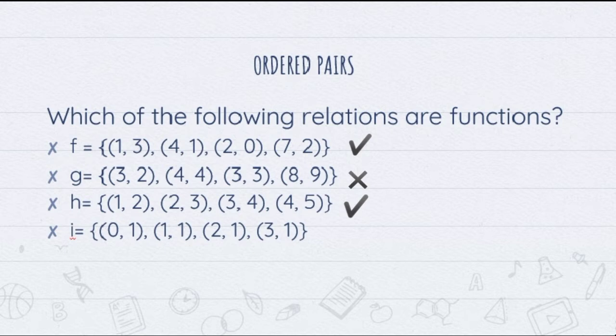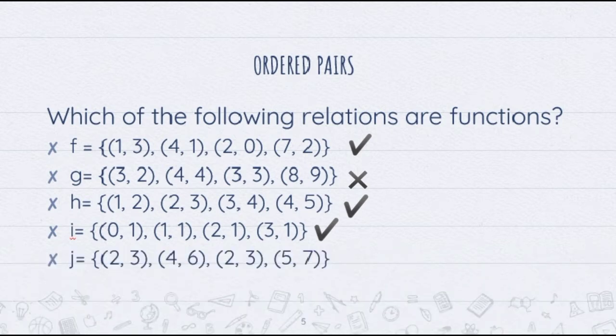As you can see, all values of y here are the same, which is 1, but it doesn't matter. As long as your x values — 0, 1, 2, and 3 — are all unique, it is still a function. Now let's have relation j with x values 2, 4, 2, 5. At first glance, you'll see a repetition of x value 2, but looking carefully, it was paired with the same y value, which is 3. Therefore, it is only taken as one, making it still a function.